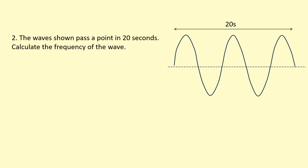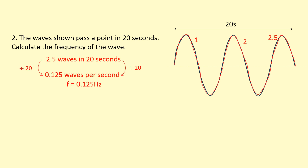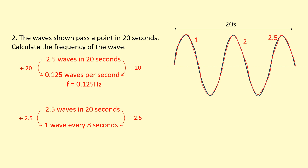Example two: the waves shown pass a point in 20 seconds — calculate the frequency. Carefully counting the waves gives two and a half waves in 20 seconds. Dividing both sides by 20 gives 0.125 hertz. Alternatively, you can find the time period first: divide 20 seconds by 2.5 waves to get one wave every eight seconds, so the time period is eight seconds. Then frequency equals one over eight, giving 0.125 hertz — the same answer either way.